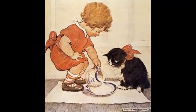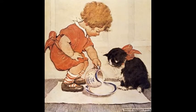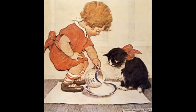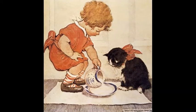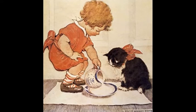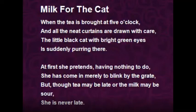'Milk for the Cat' is a children's poem about a cat and how she gets her daily dose of milk. The cat goes to the poet's house at 5 in the evening every day, knowing that it is tea time at the poet's house — she appears without fail and at the right time.